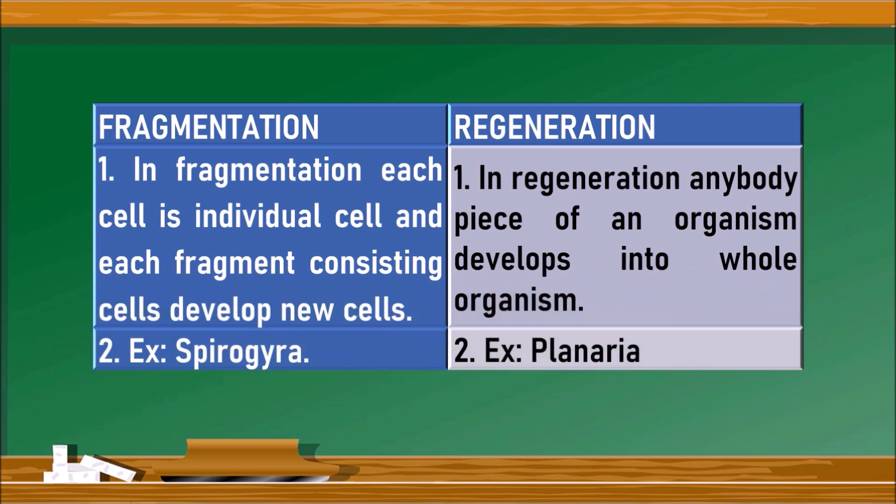But regeneration occurs in some multicellular organisms where complete differentiation has taken place. For example, planaria. Planaria is a multicellular organism in which there are different organ systems in its body. If the planaria is cut into several pieces, each piece will develop into an organized, well-developed planaria. So in regeneration, any body piece of an organism develops into a new whole organism.